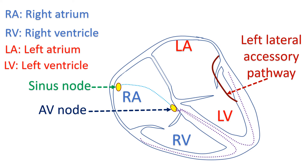Similarly, pre-excitation may not be manifest because the accessory pathway is far away from the sinus node, as in a left lateral pathway. When adenosine prolongs AV nodal conduction, conduction through the slower accessory pathway becomes manifest as pre-excitation.